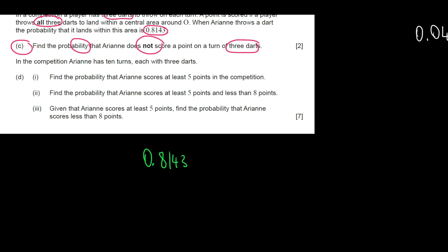Find the probability that Ariane does not score a point on a turn of three darts. Given that she has three attempts of throwing and the probability of landing in that specific region is 0.8143, I'm writing this for question C. Because they are independent from each other, the probability of landing three consecutive times is this number to the power of three. However, the question is the opposite of that. The question is what's the probability of not scoring a point?